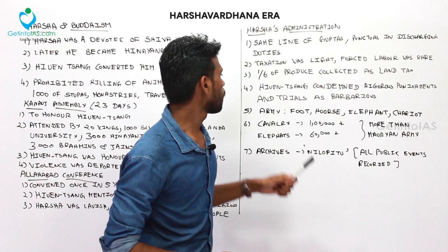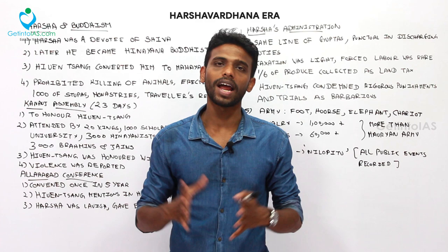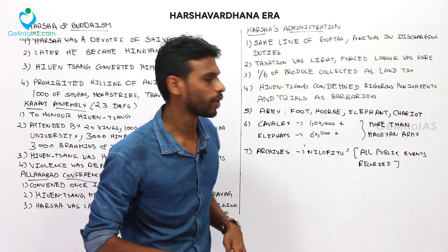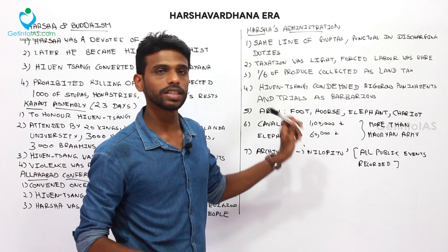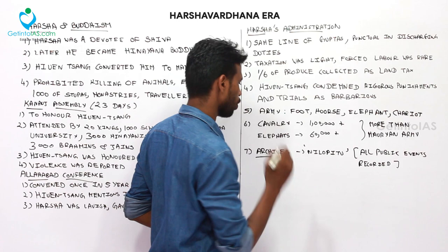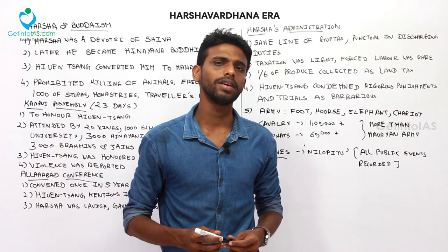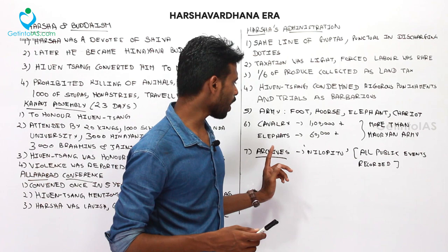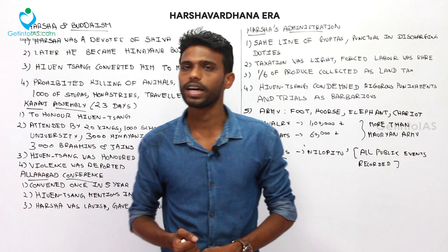Regarding the army, Harsha had a large army — larger than the Mauryan army. The cavalry was over one lakh horses and the elephant regiment was over 60,000. His administration records were kept in a documented format called archives. In Harsha's administration, archives were called Nilopitu, and all public events were recorded in this system.